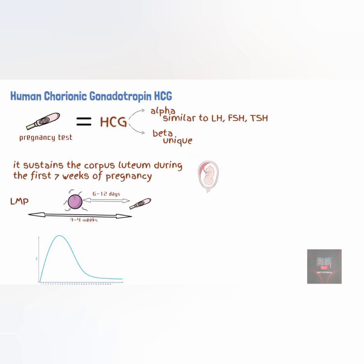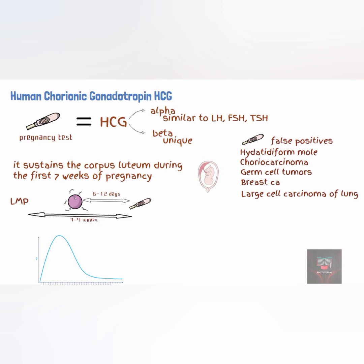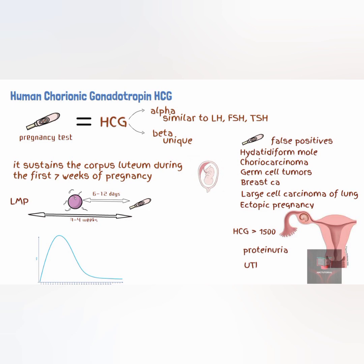Pregnancy tests can also detect HCG produced by hydatidiform mole, choriocarcinoma, germ cell tumors, HCG produced by some breast cancers, and large cell carcinoma of the lung, and also ectopic pregnancies. If HCG level is greater than 1,500 mIU per mL and the transvaginal ultrasound scan shows no evidence of intrauterine pregnancy, the patient most likely had an ectopic pregnancy. Proteinuria and urinary tract infection could also give a false positive urine beta-HCG test.